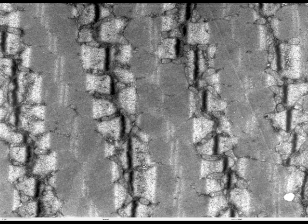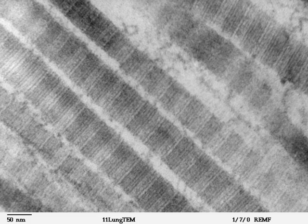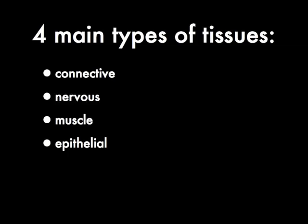Tissues — what are they? This is a tissue. Tissues are made of a group of cells. Tissues make up multicellular organisms. There are four main types of tissue: connective, nervous, muscle, and epithelial.